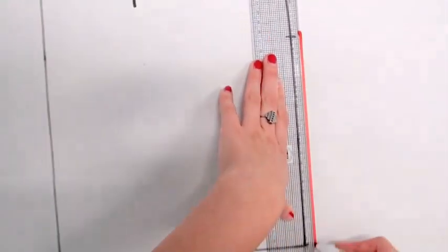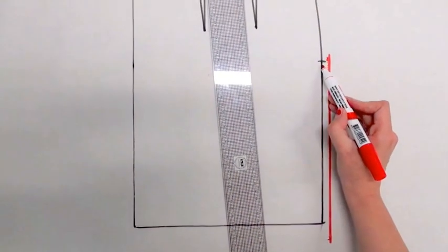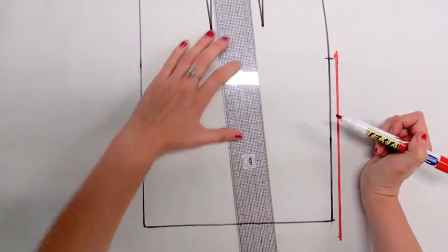Then you simply add it to the edge, and this area from here to here now becomes one centimeter.